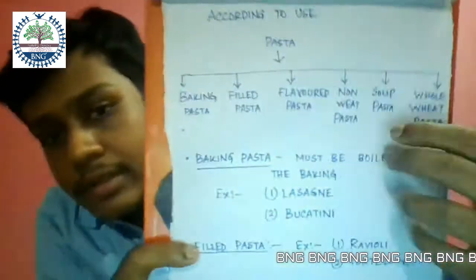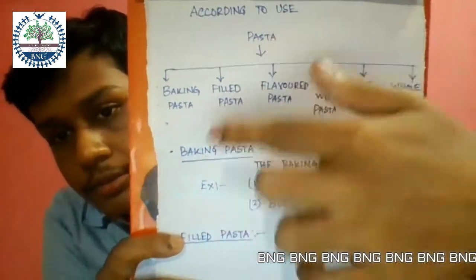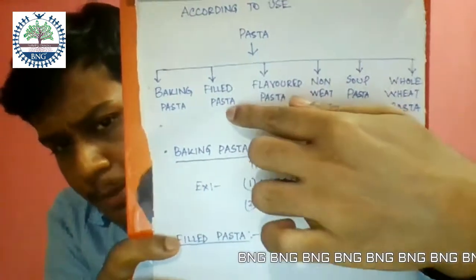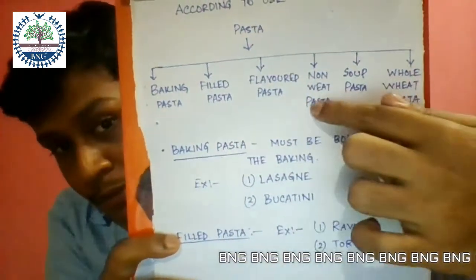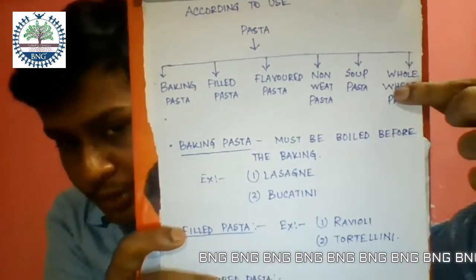Pastas are classified into six categories according to their use: baking pasta, filled pasta, flavoured pasta, non-wheat pasta, soup pasta, and whole wheat pasta.